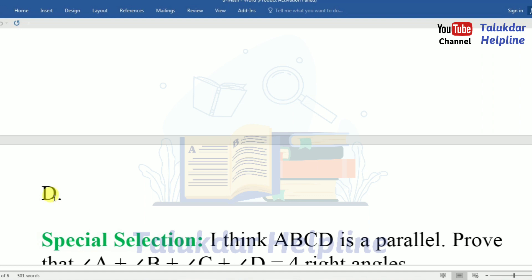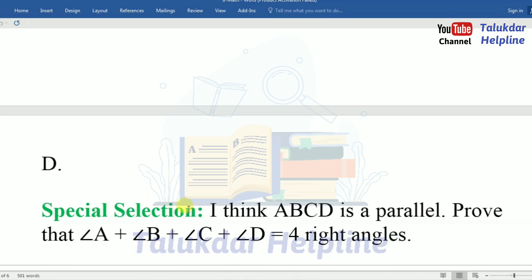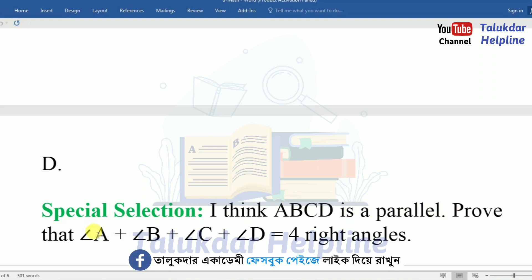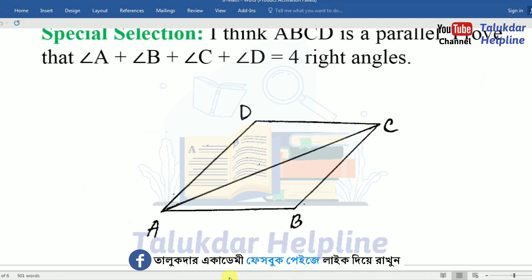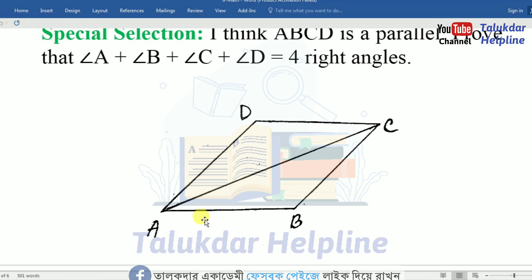Number D. Given: ABCD is a parallelogram. Prove that angle A plus angle B plus angle C plus angle D equals 4 right angles. That is the figure of question D.